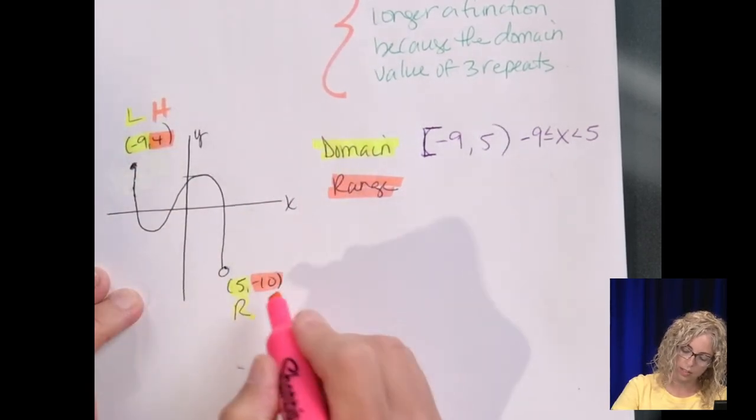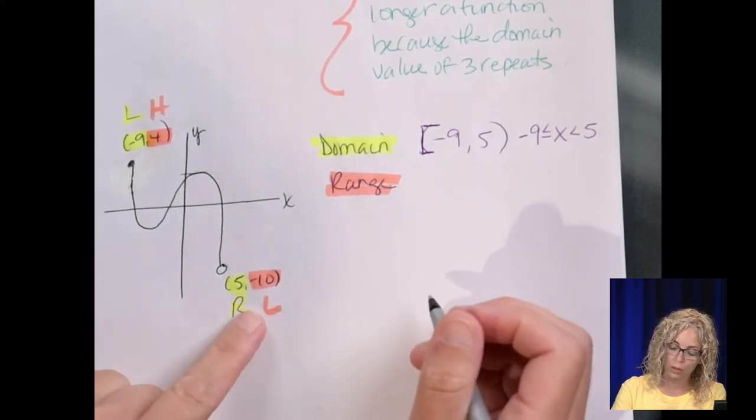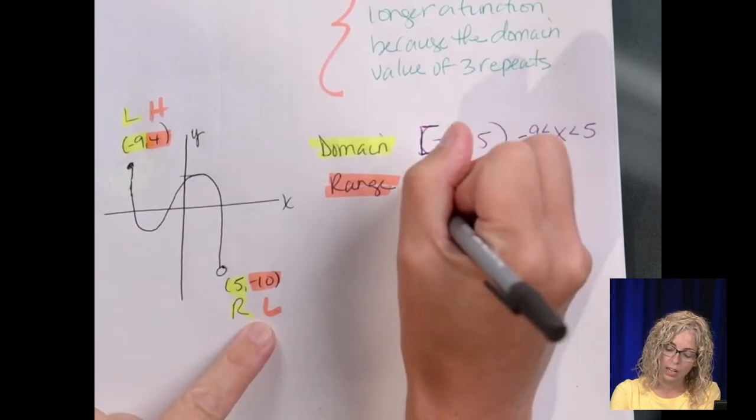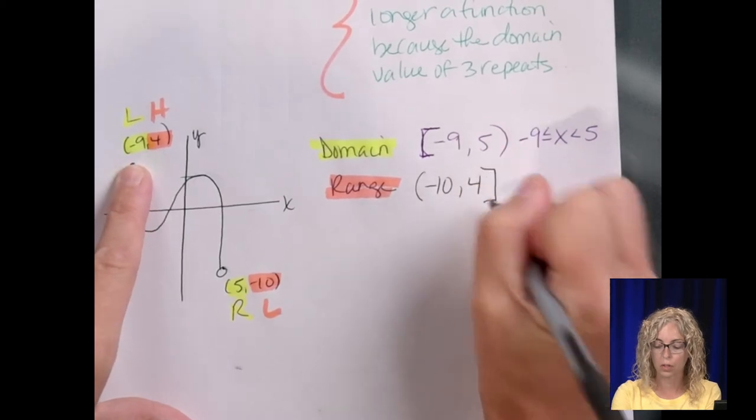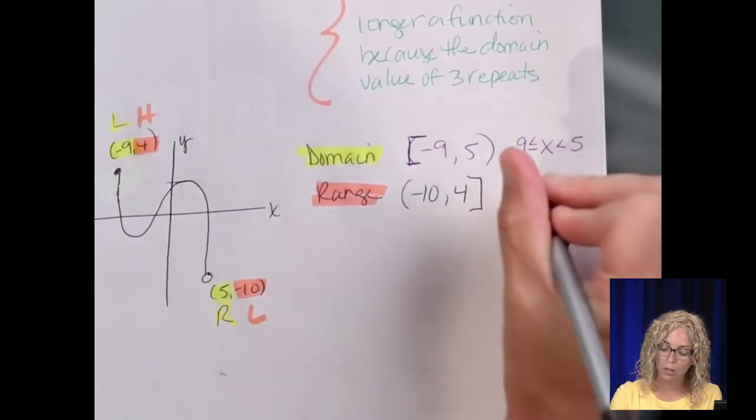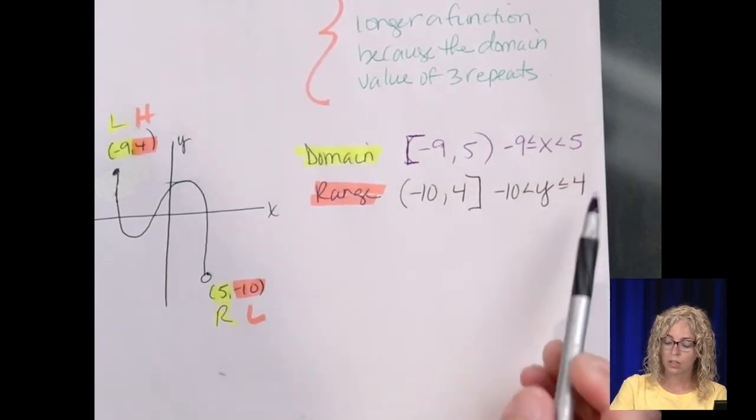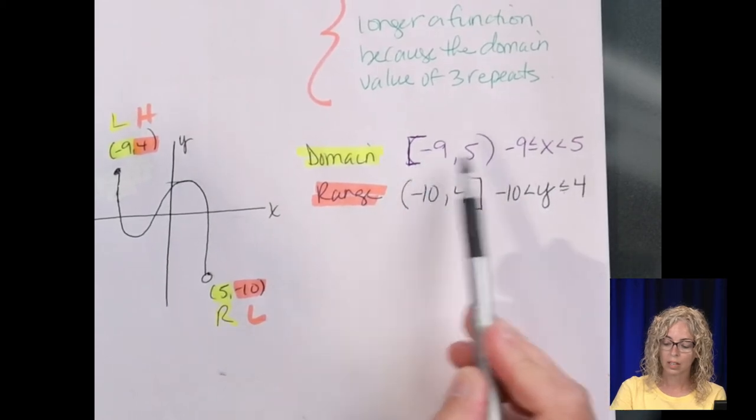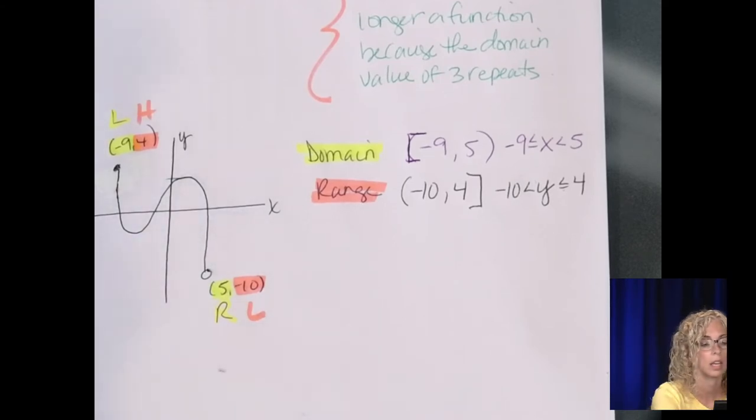Now the range has to do with your highest and lowest point. So this is the highest, this is the lowest. So we typically write from lowest to highest, just like smallest to largest, from left to right. So we go from -10 up to 4. -10 is where the open circle is, so that's parenthesis, up to 4, which is closed, so bracket. Or in the inequality notation, -10 < y ≤ 4. You have that equal to when it's a bracket, and you don't have it when it's a parenthesis. So there's domain and range.